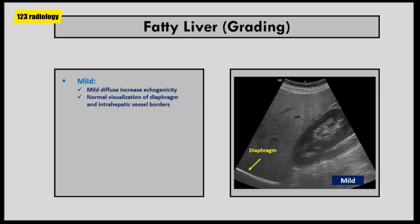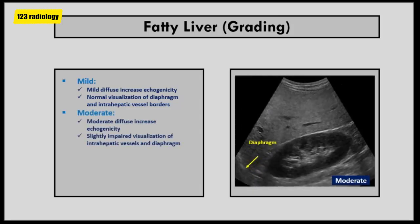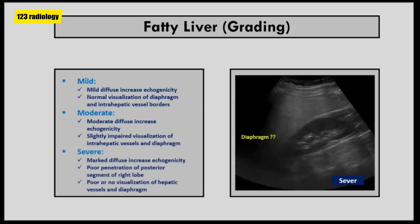Depending on the severity of fatty deposition, a subjective and semi-quantitative grading of fatty liver can be made, ranging from mild to severe. In mild fatty infiltration, there is mild diffuse increased hepatic echogenicity with normal visualization of the diaphragm and intrahepatic vessel borders. In moderate fatty infiltration, there is moderate diffuse increased hepatic echogenicity with slightly impaired visualization of intrahepatic vessels and diaphragm. In severe fatty infiltration, there is marked increased echogenicity with poor penetration of posterior segments of the right lobe of the liver, and poor or no visualization of hepatic vessels and diaphragm.